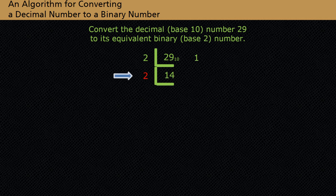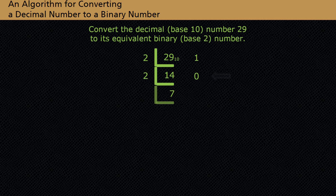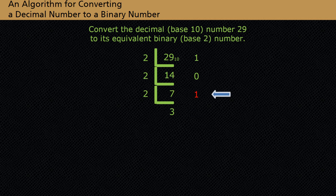Now divide 2 into 14. If we divide 2 into 14, we get a quotient of 7 with a remainder of 0. Note the placement of the remainder. Now divide 2 into 7. If we divide 2 into 7, we get a quotient of 3 with a remainder of 1. Once again, note the placement of the remainder.